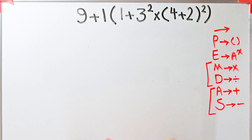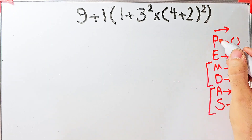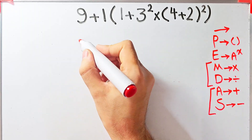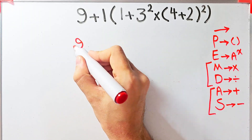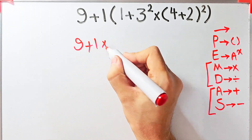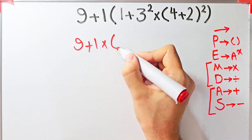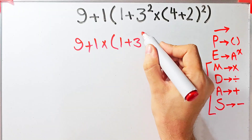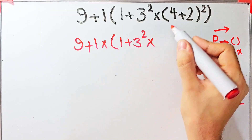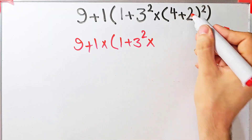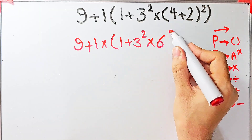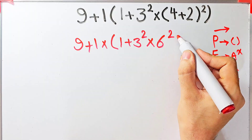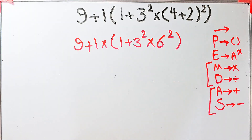Multiplication and division have the same level of priority, and addition and subtraction also have the same level of priority. When we have both in an expression, we start from the left. Following the PEMDAS rule, we first simplify the parentheses: we now have 9 plus 1, then times 1 plus 3 to the power of 2, then times 4 plus 2, then to the power of 2. Four plus 2 equals 6.